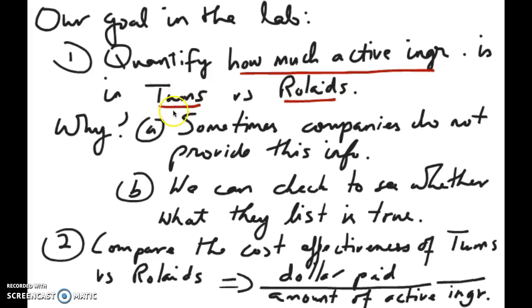That first tells you if Tums or Rolaids gives you more active ingredient and secondly you can then compare the cost of those active ingredients. So let's say Tums gives you more active ingredient than Rolaids. Well do they charge more also for that active ingredient or do they actually charge the same amount?